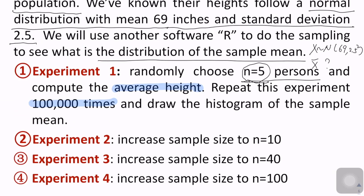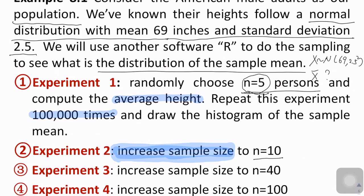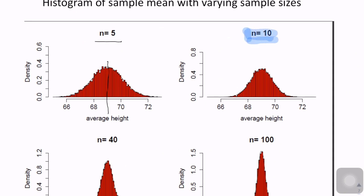If we change the sample size from n = 5 to n = 10 — meaning we randomly pick 10 people instead of 5 — and repeat the experiment 100,000 times, we get another histogram. When n = 10, the location of the curve does not change, but the width has decreased compared to when n = 5.